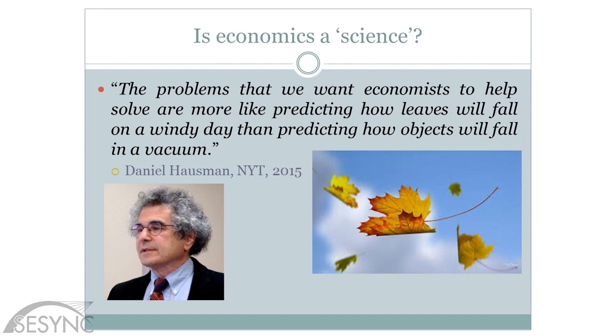Daniel Hausman, a philosophy professor at Wisconsin-Madison, had an interview in the New York Times recently. He said: the problems we want economists to help solve are more like predicting how leaves will fall on a windy day than predicting how objects will fall in a vacuum. I like that analogy a lot. It's messy, there are a lot of factors at play, and we analyze a subset of those factors. We're not always going to get it right. So if economics is a science, it's an inexact one.